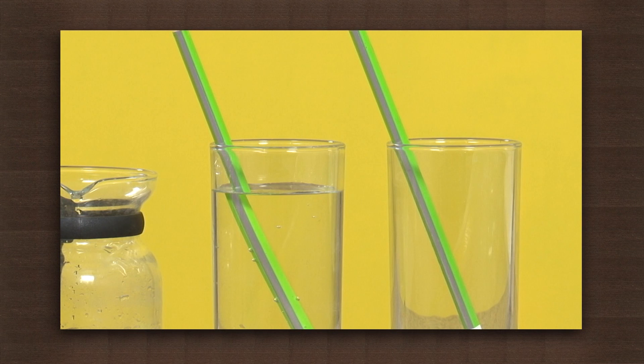No. This apparent bending of the pencil is because the speed of light is different in water and air. So the light coming from one part of the pencil lying below the water changes its direction on coming out into the air.